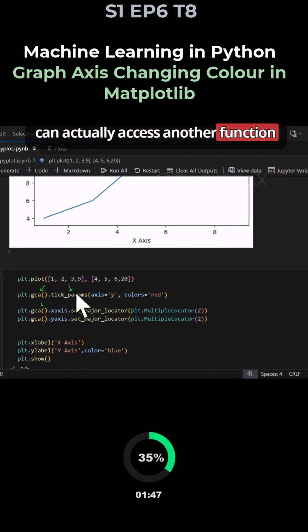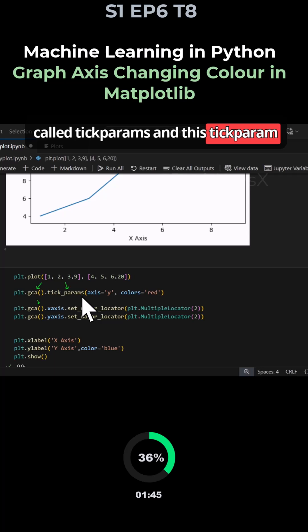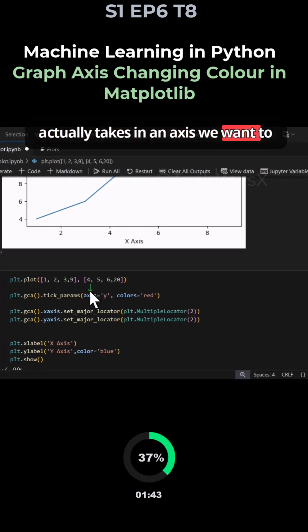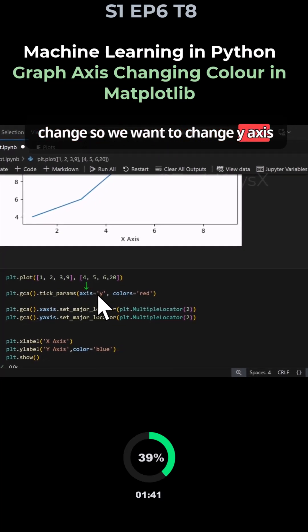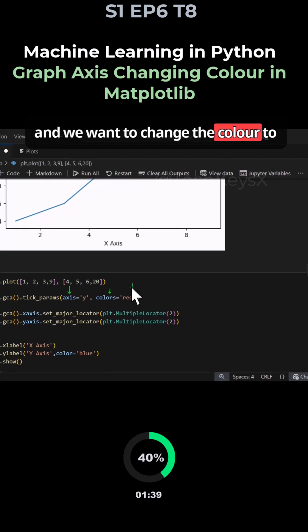This function is called tick_param and this tick_param takes in an axis we want to change. We want to change y-axis and we want to change the color to red.